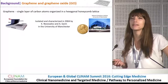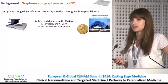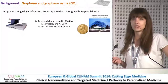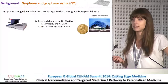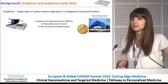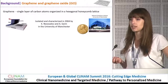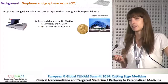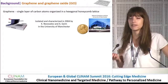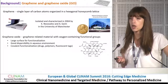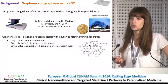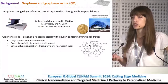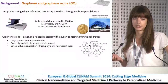Graphene has been isolated and characterized by two scientists at the University of Manchester back in 2004. For this discovery they later received a Nobel Prize, and since the isolation and characterization of this material, it has been studied a lot and many exciting applications have been foreseen. Graphene oxide belongs to the group of graphene-related materials, and it has oxygen-containing functional groups on the surface.